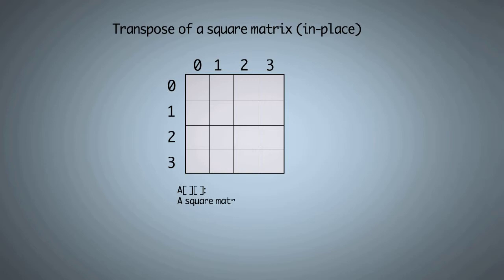Transpose of a square matrix can be obtained by changing rows to columns and columns to rows, i.e. by swapping values stored at indices i,j with j,i.